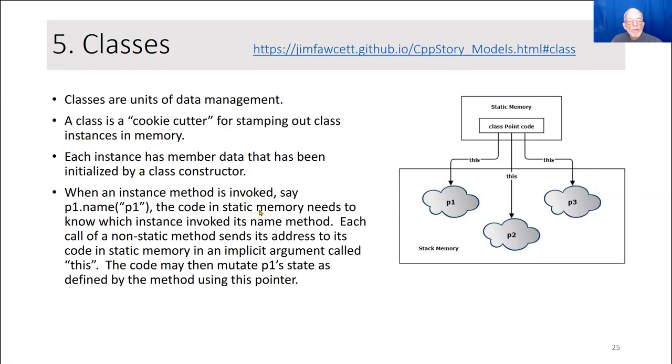Next question is, when we call a function, for example, this is a point class, and it has a name method. If we call p1.name with some string, in this case p1, that's mutating the state. And the question is, how does this code find the object to mutate? The answer is that every call from a non-static member function passes its address to the class code identified by this identifier, T-H-I-S, this identifier. When we call p1.name, that sends p1's address, and then the class code simply changes the name in this class to whatever we supplied, in this case p1.